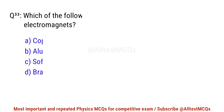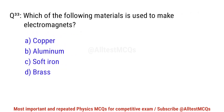Question No. 33. Which of the following materials is used to make electromagnets? Right option is C. Soft iron.